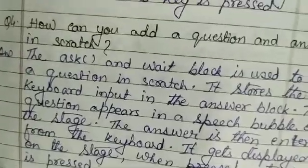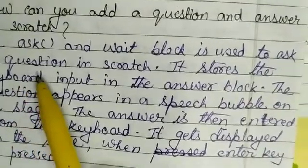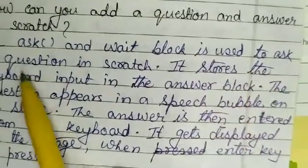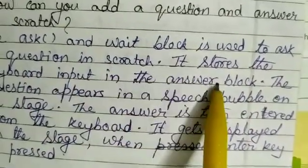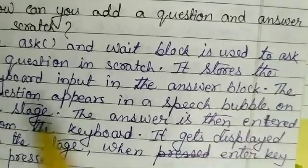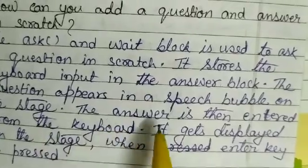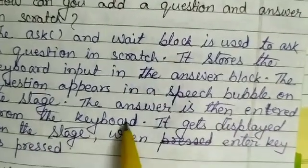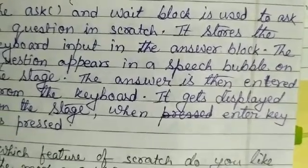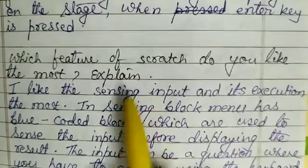Question number 4: How can you add a question and answer in Scratch? The 'ask and wait' block is used to ask a question in Scratch. It stores the keyboard input in the answer block. The question appears in a speech bubble on the stage. The answer is then entered from the keyboard and gets displayed on the stage when the Enter key is pressed.